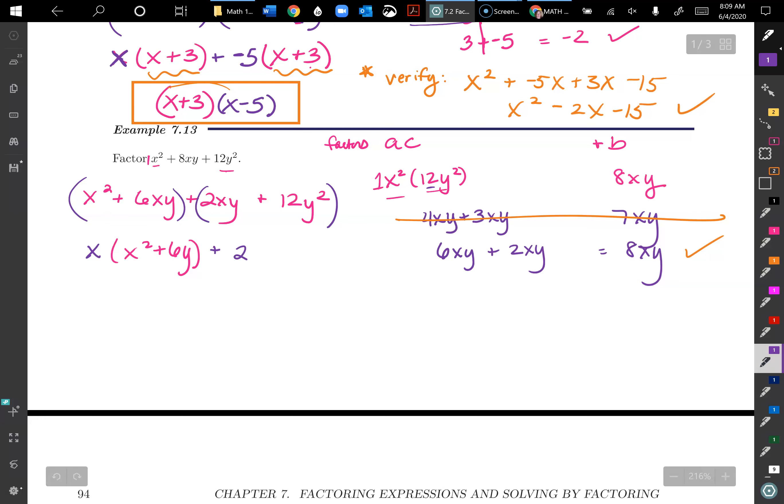So I can pull out an x out of this. And I'm left with x plus 6y. Then from 2xy plus 12y squared, I can pull out a 2 for the number part. And then I have a common variable of y. Then what's left is going to be x plus 6y. And that's what I'm going for. Remember, I want to have that GCF. So x plus 6y is our common factor. And then what's left, we write in parentheses times the other factors that are remaining, x plus 2y is binomial.